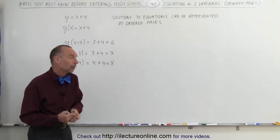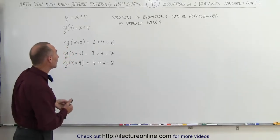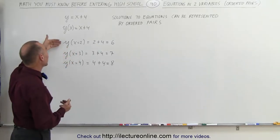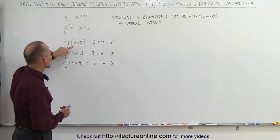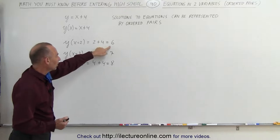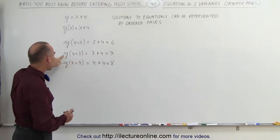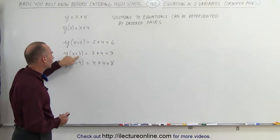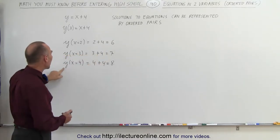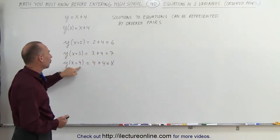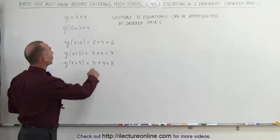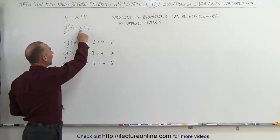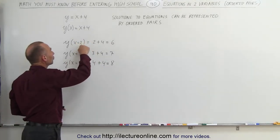So what do we mean by ordered pairs? Here we are evaluating the equation for three different values for x. y, when x equals 2, is equal to 6. y, when x equals 3, is equal to 7. And y, when x equals 4, is equal to 8. We find those values by simply replacing x by those values.